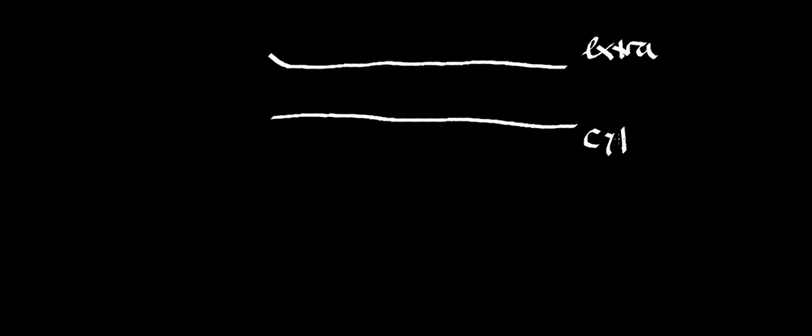To understand the function of the tyrosine kinase receptor, we have to be looking at the membrane. I'm going to draw a small membrane here. The top side will be the extracellular side, and this side is the cytosolic side.